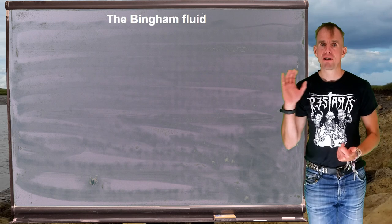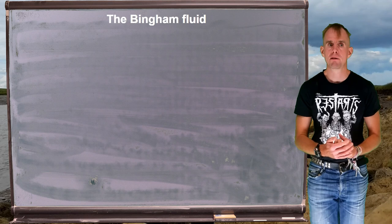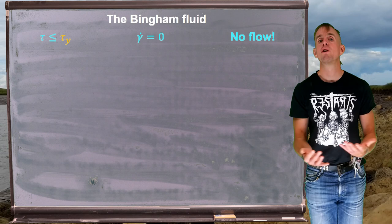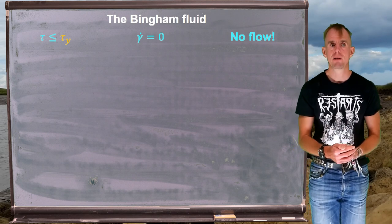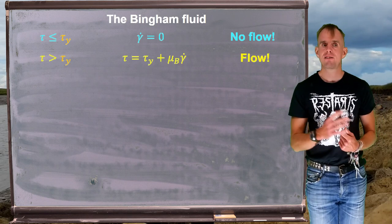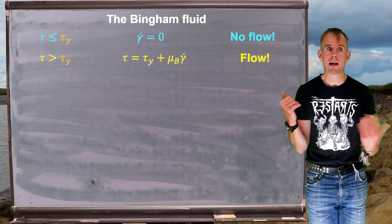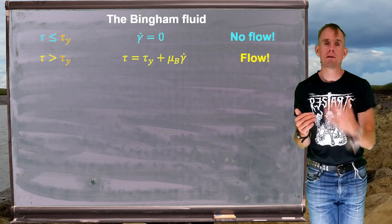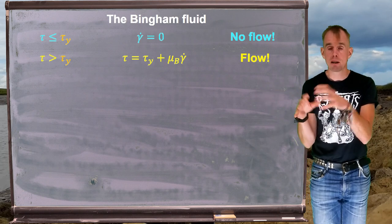So let's introduce our first viscoplastic constitutive law. It is the Bingham fluid. Now the Bingham fluid says that below a certain shear yield stress there is no flow. This is common for all of the viscoplastic constitutive laws. Furthermore, it states that once that shear yield stress has been exceeded you have flow that looks a little bit Newtonian. So if you look at the expression there in yellow tau equals tau y, my shear yield stress, plus mu b gamma dot. Mu b is my Bingham viscosity, gamma dot is my shear rate, and we recognise that product of terms as being Newtonian.